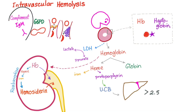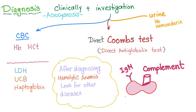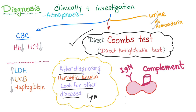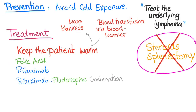For diagnosis of cold agglutinin disease: clinically, look for acrocyanosis and the typical snow-shoveling elderly patient scenario. Labs include CBC showing low hemoglobin and hematocrit, high LDH, high unconjugated bilirubin, low haptoglobin, hemoglobinuria, and hemosiderinuria. The gold standard is the direct Coombs test (direct antiglobulin test). After diagnosing hemolytic anemia, screen for underlying diseases such as lymphoma or Mycoplasma infection.